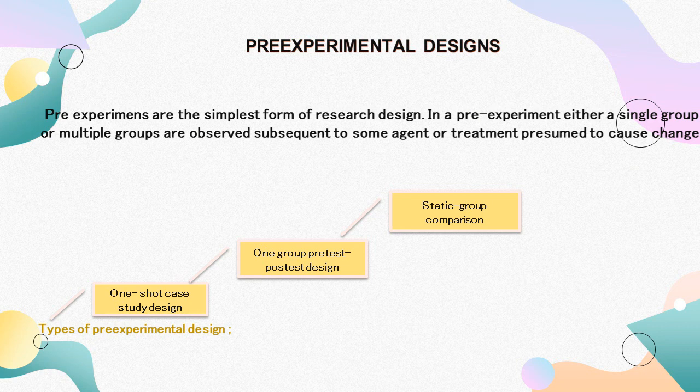If you become aware of these sorts of weaknesses in a design, you should be able to avoid them. There are three types of pre-experimental design: the first is one-shot case study design, next is one-group pretest-posttest design, and the last is static group comparison.